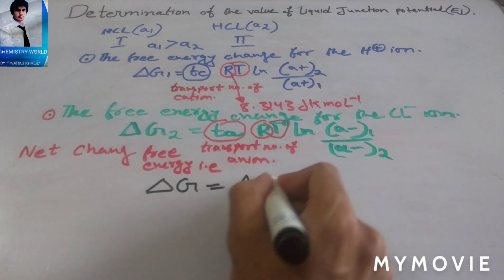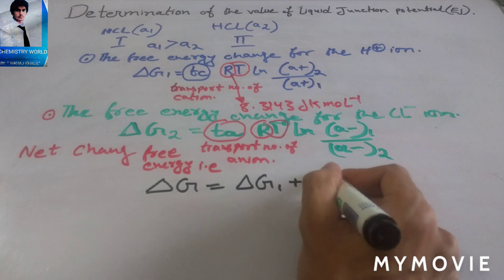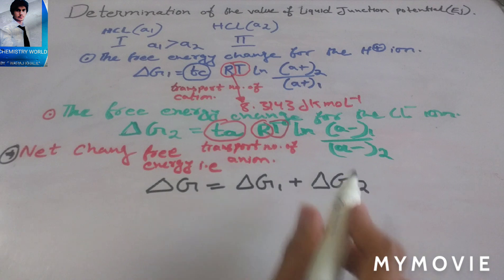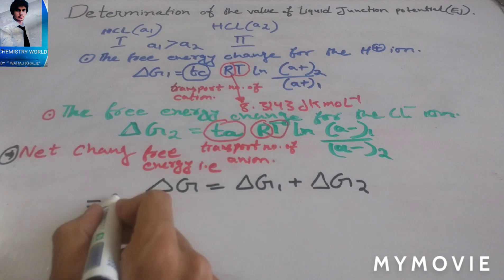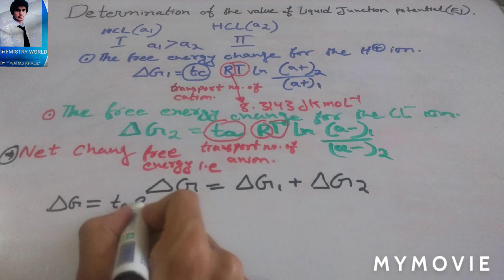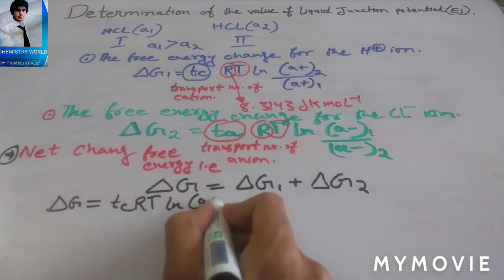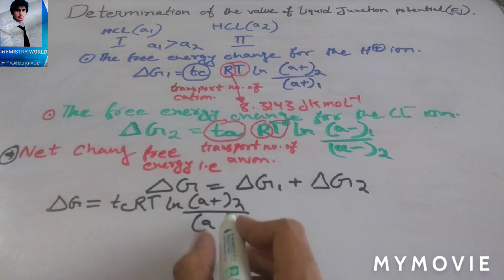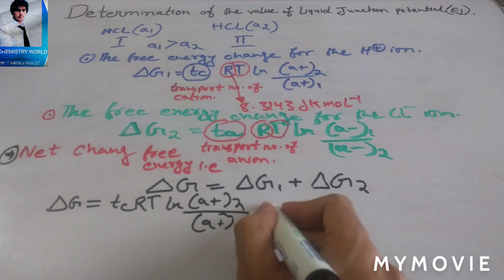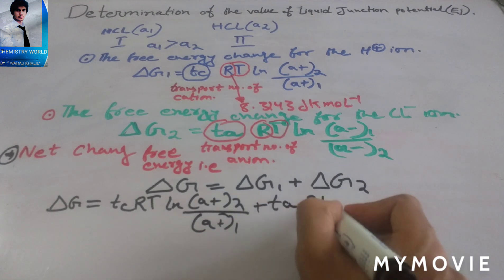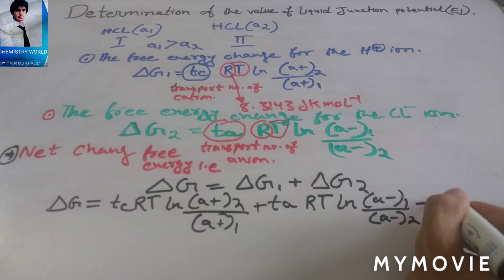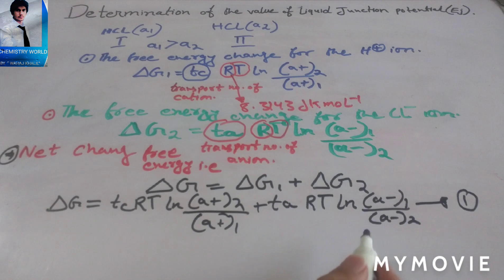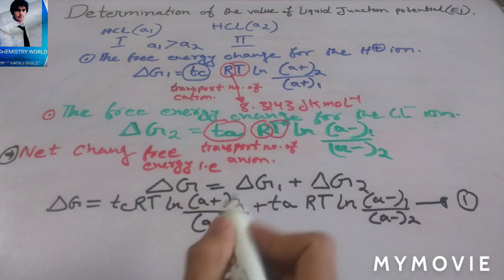The net free energy change is: ΔG = ΔG₁ + ΔG₂. Combining both equations: ΔG = tc · R · T · ln(a⁺₂ / a⁺₁) + ta · R · T · ln(a⁻₁ / a⁻₂). This is equation number 1.